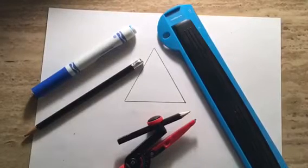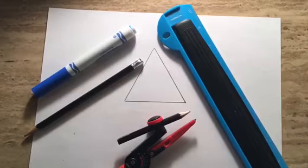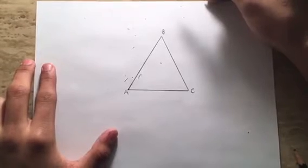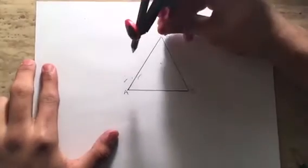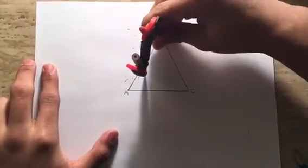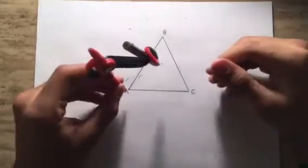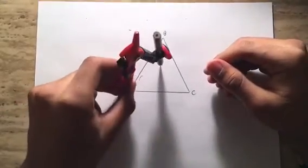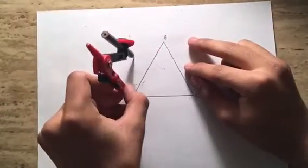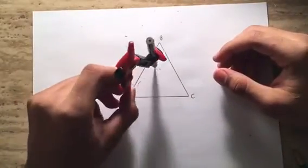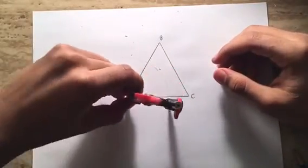Now the second thing we're going to do is circumscribe a triangle in a circle. As always, you're going to need the same materials. The first step is to draw your triangle — we'll use the same equilateral triangle. For the second step, construct a perpendicular bisector of segment AB, as you guys can see right here. Make sure it goes all the way — really long.